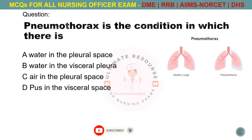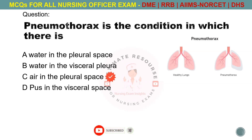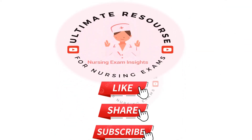Pneumothorax is the condition in which there is. Options are A. Water in the pleural space, B. Water in the visceral pleura, C. Air in the pleural space, D. Pus in the visceral space. The answer is C. Air in the pleural space. If you find the video useful, please share and subscribe to the channel Nursing Exam Insights, your ultimate resource for all nursing exams.